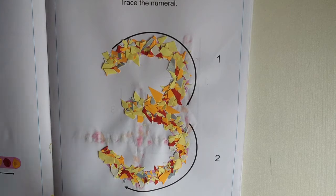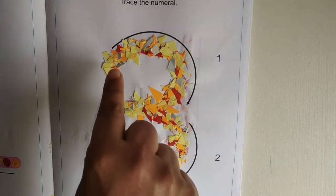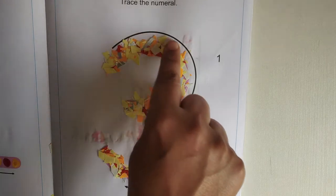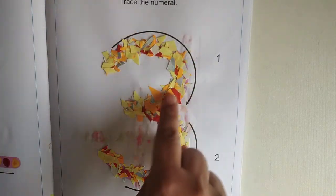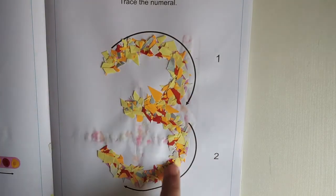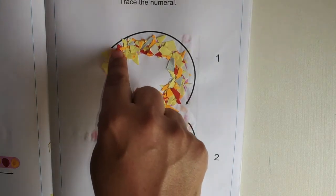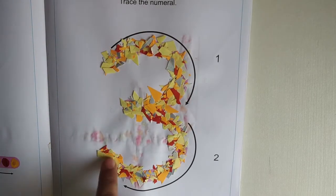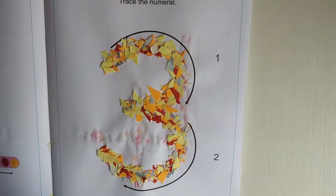You are also going to take your pointer finger and trace very nicely, children. When you are tracing, you are going to say three. See how ma'am repeats? Three, three.